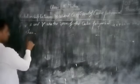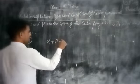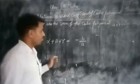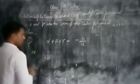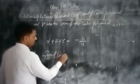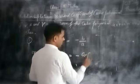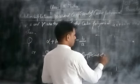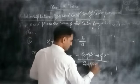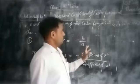So everyone, look here. The first relationship between zeros and coefficients is: alpha plus beta plus gamma is equal to minus B upon A. In other words, we can say that the sum of zeros of the cubic polynomial is always equal to minus the coefficient of x squared upon the coefficient of x cubed.